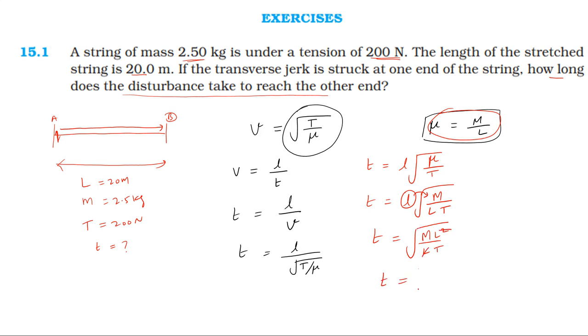So, time is equal to length, square root of linear density by tension. So, time is equal to length of the wire divided by tension.